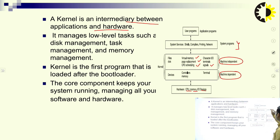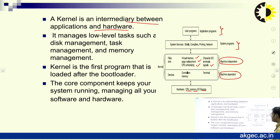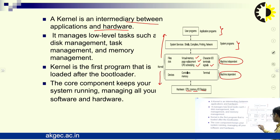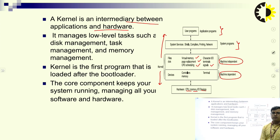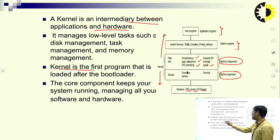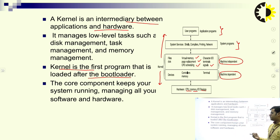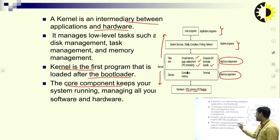Here are the system programs and application programs. Kernel provides an interface — it acts as an intermediary between application or system programs and hardware like CPU, memory, and I/O devices. It is the first program loaded after the bootloader when you start a system. The operating system files are loaded into main memory, and that program is called the kernel. After the bootloader, all main programs of the operating system are loaded into main memory. It is the core component that keeps your system running, managing all your software and hardware.